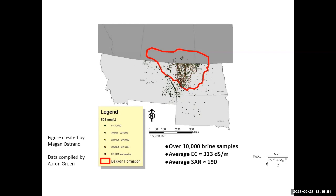Brine spills don't cover as many acres but can be more impactful to those acres. Data assembled by Megan Ostrand looked at over 10,000 brine samples — these had an average electrical conductivity of over 300. Seawater is 58, so brine is about five to six times more saline than Caribbean seawater. The sodium content is 190 to 200, whereas naturally sodic soils are typically 5, 6, 10, or 15 — brine imposes a very large shift.